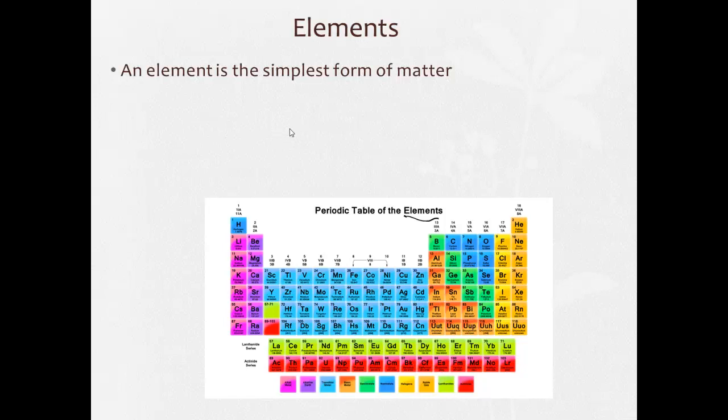So an element is the simplest form of matter. You remember when we looked at particle diagrams, elements are just drawn as a circle, and it can be either white or dark, either one of these would be an element.